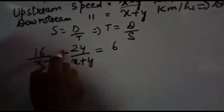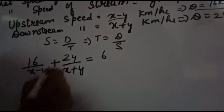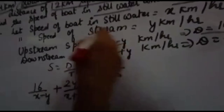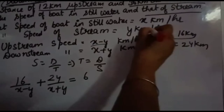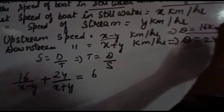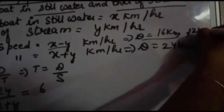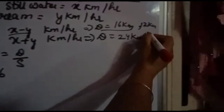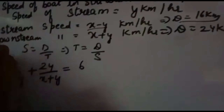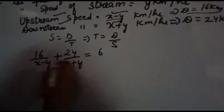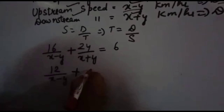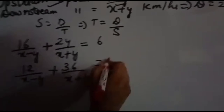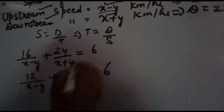For the second case: upstream distance is 12 km and downstream distance is 36 km. So the time equation is: 12 over (x minus y) plus 36 over (x plus y) equals 6 hours. This is equation 1 and equation 2.